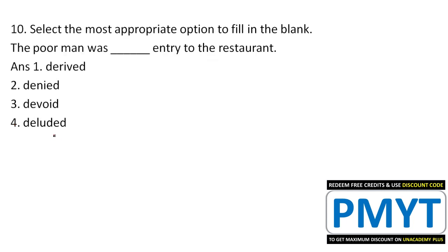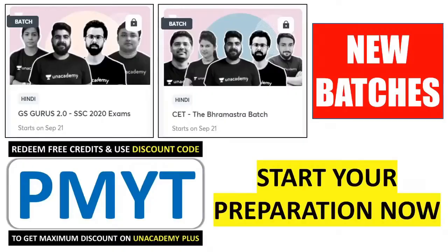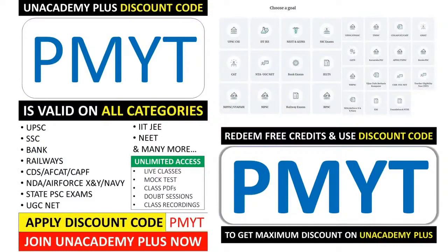Tenth question: 'The poor man was ___ entry to the restaurant.' Note: the answer key may have an error here. 'Delude' means to make someone believe something false; 'devoid' means lacking. 'Denied' is the correct answer — 'The poor man was denied entry to the restaurant.' That concludes your 10 questions. To join the CET Brahmast batch, GS Gurus, or Foundation batch for SSC exams, install the Unacademy app, choose the SSC exams category, get a subscription, and apply the PMYT referral code for a maximum discount.